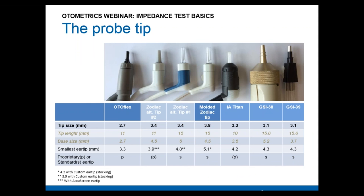Here is an overview of different probe tips we have tested and developed. You can see there is quite a lot of variation. The probe tip diameter should ideally be between 2.7 mm — as seen on the Autoflex — up to about 3.4 to 3.8 millimeters, to ensure you can fit the right ear tip mushroom size.